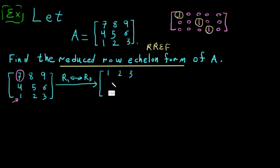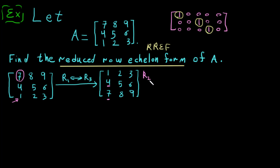We didn't change anything in the second row, so row two remains 4 5 6. After the row exchange, row three is now 7 8 9. Now we want to eliminate the entries below the leading one. We need to change the second row entry in column one to zero — 4 minus 4 gives zero — so we multiply R1 by 4. The operation is R2 minus 4·R1 goes to R2.